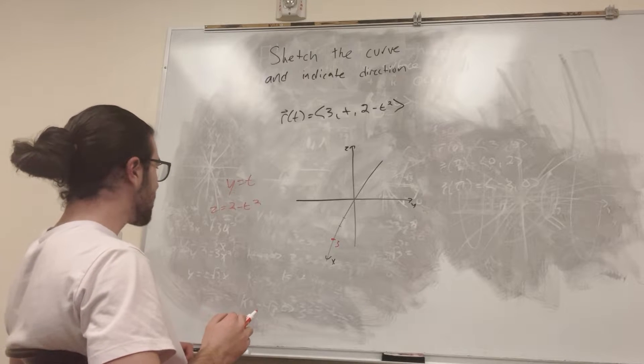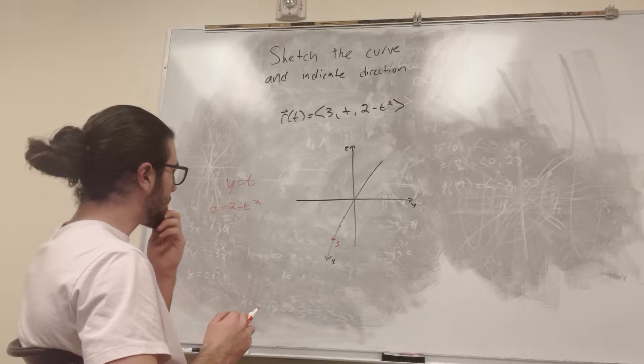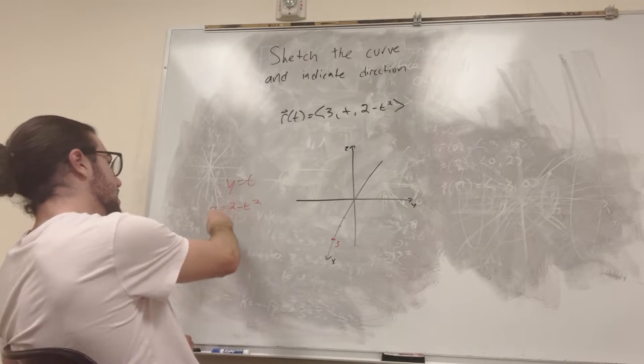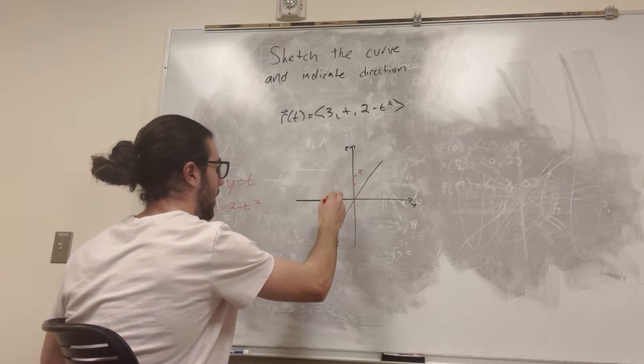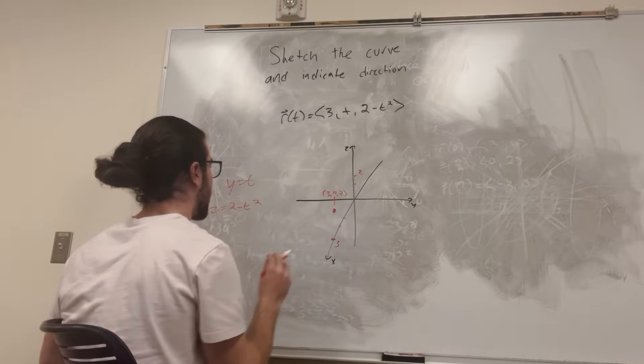Alright, how can we do something with this? Well, let's just plug in values. Let's say t is equal to 0, so that means y is equal to 0, and then z is going to be equal to 2. So there's going to be a point about like here, this is at (3, 0, 2). It's this point right there.